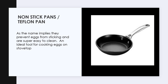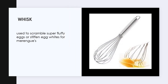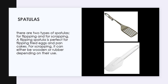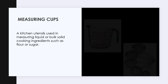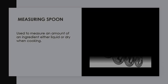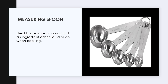A Teflon pan, or non-stick pan, prevents eggs from sticking and is super easy to clean — it is an ideal tool for cooking eggs on the stovetop. A whisk is used to scramble super fluffy eggs or to stiffen egg whites for meringue. There are two types of spatulas: a flipping spatula, perfect for flipping fried eggs and pancakes, and a scraping spatula which can be wooden or rubber depending on your use. Measuring cups are kitchen utensils used to measure liquid or bulk-solid cooking ingredients such as flour or sugar. Measuring spoons are used to measure an amount of an ingredient, either liquid or dry, when cooking.